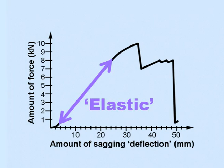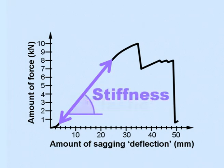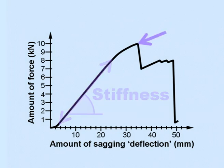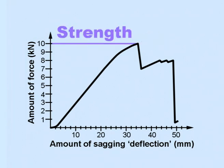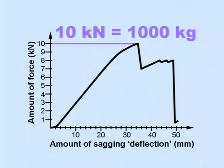Here where there is a straight line, this is elastic behaviour. This point here shows where the beam broke first of all. The graph shows that the maximum load that the beam took was a ton, which is quite impressive.